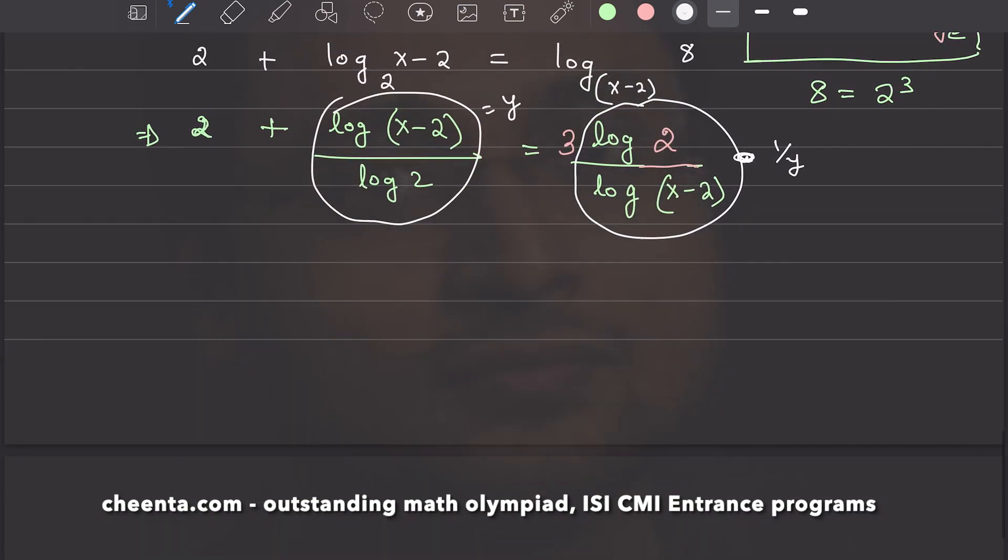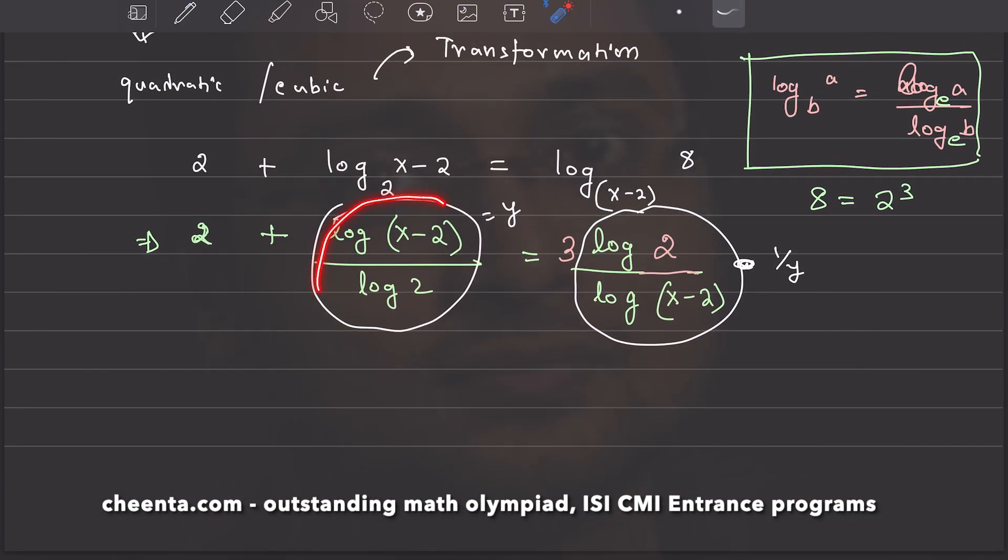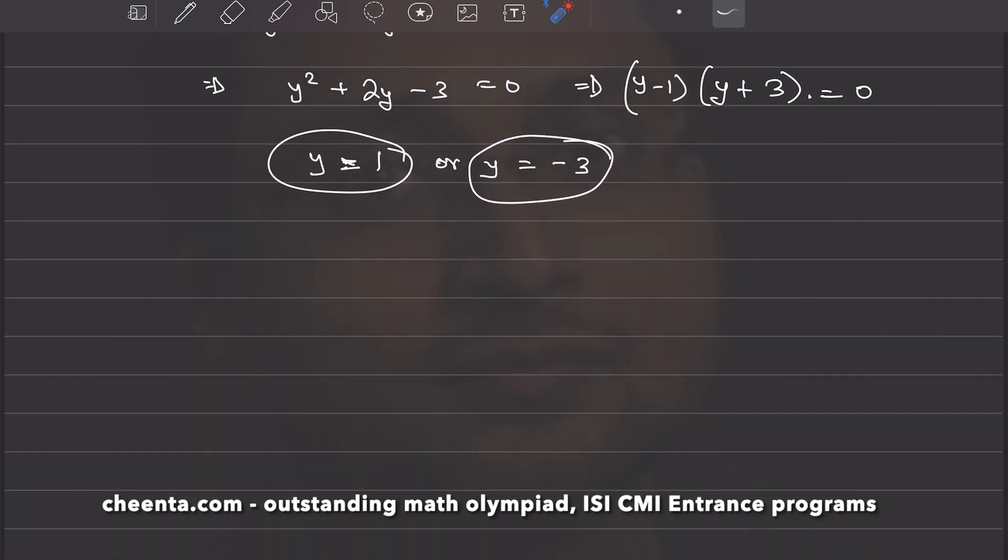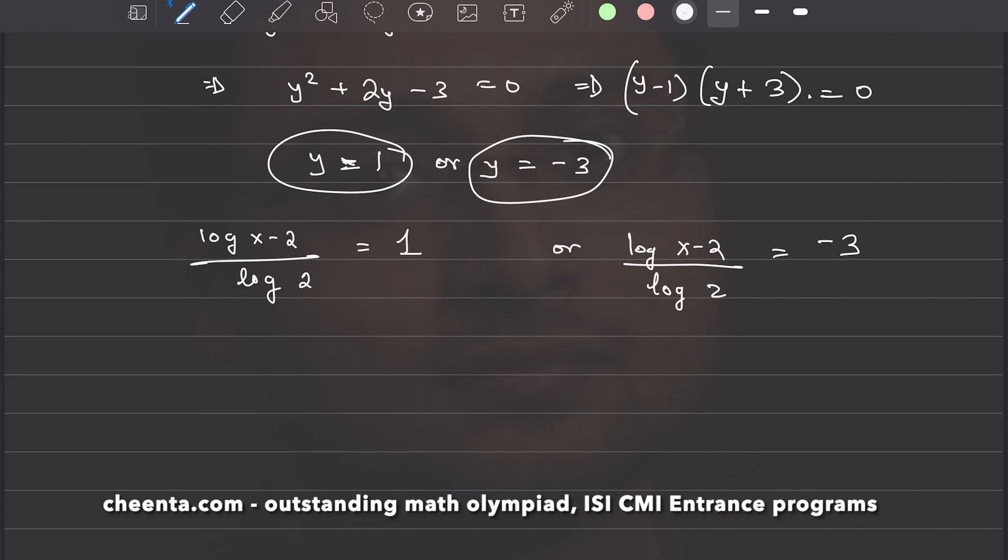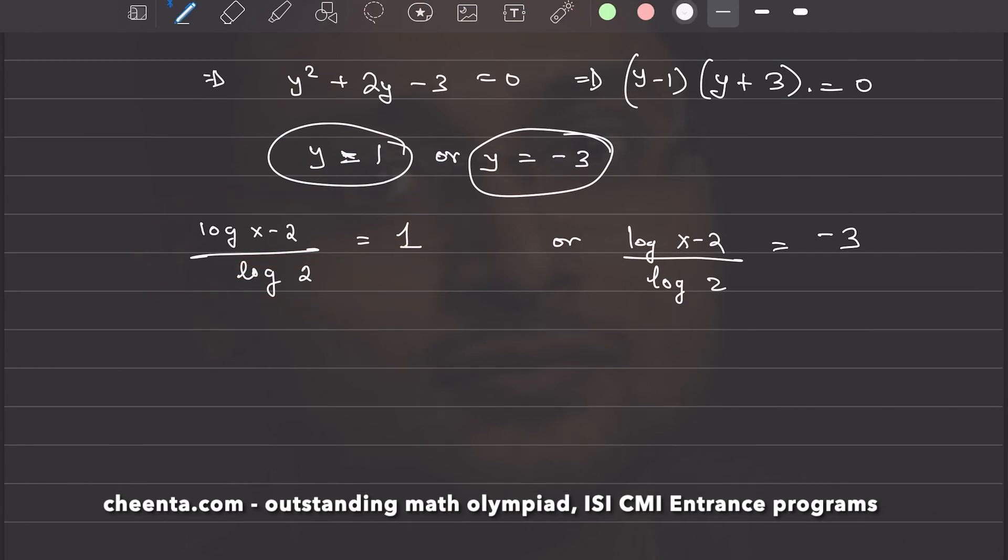Now, let's go back to the transformation. Log of x minus 2 by log 2 is my y. So, log of x minus 2 by log 2 is either 1 or log of x minus 2 by log 2 is negative 3. From the first one, from the first equation, we can just simply cross multiply this. So, we get log of x minus 2 equals to log 2.